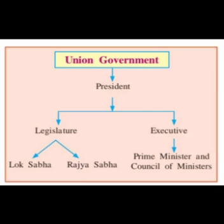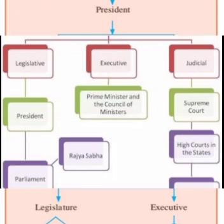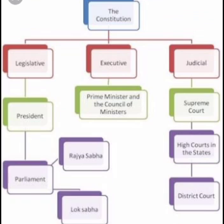The legislature at the national level, that is at the central level, is called the Parliament. It consists of the President and the two houses of Parliament — Lok Sabha and Rajya Sabha. India's Union executive comprises of the President, Prime Minister, and the Council of Ministers. About the legislature and executive we have already studied in the previous chapters of civics.